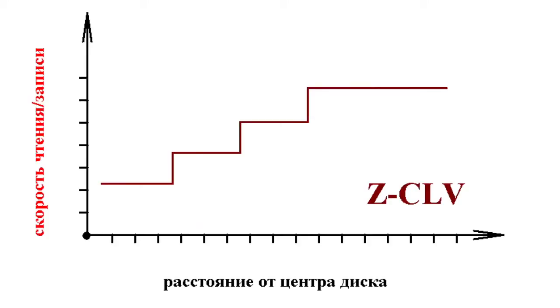Z-CLV — zone constant linear velocity. This mode is supported by the majority of high-speed writing drives. In it, a disc is divided into several zones with constant linear speed. Drives typically support various modes of data reading. In specifications, the maximum speed of data transmission for a given type of disc is specified.